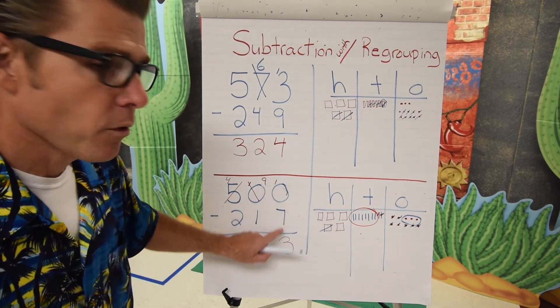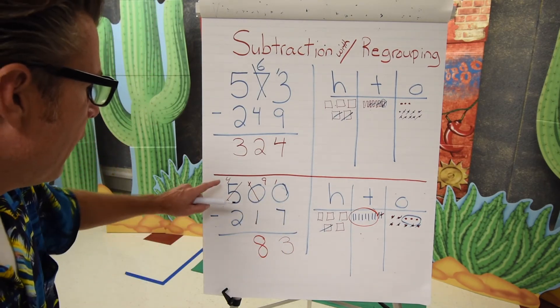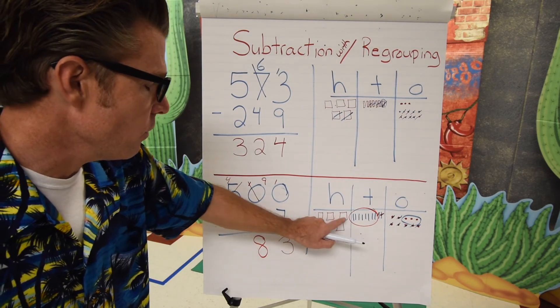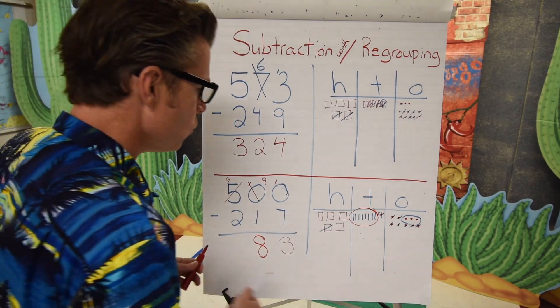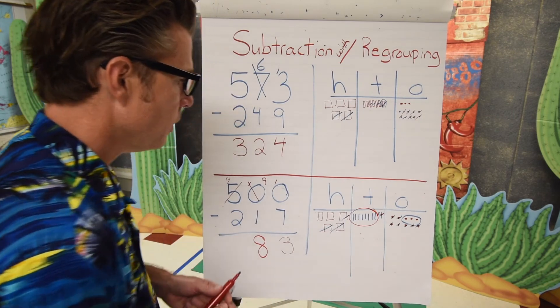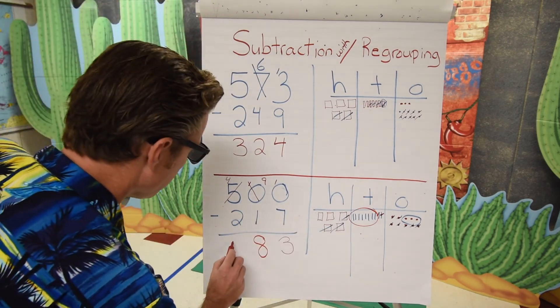We're done with the ones and tens. Looking at the hundreds, I have four hundreds and I'm looking to take two away, leaving me with two. So our answer is two hundred and eighty-three.